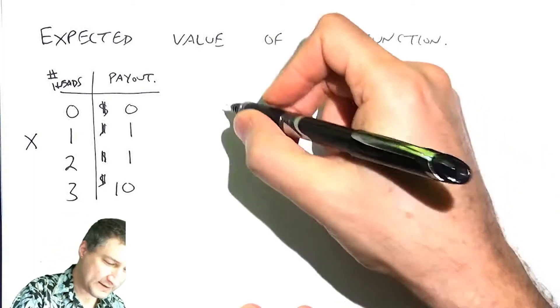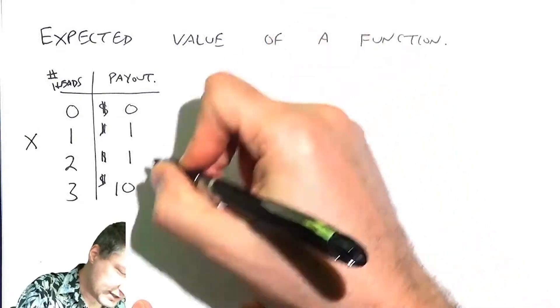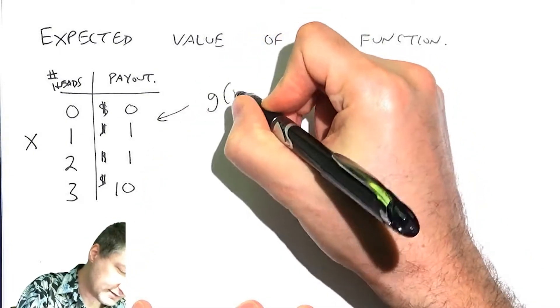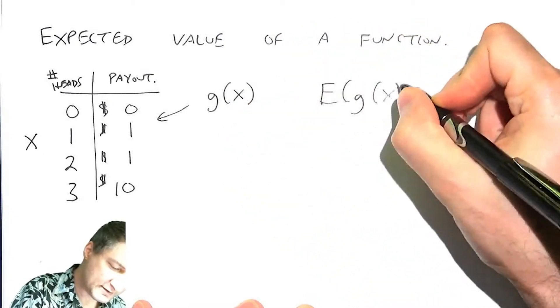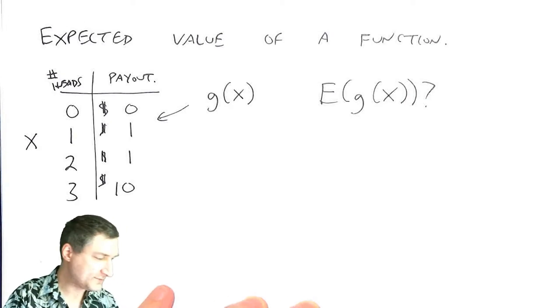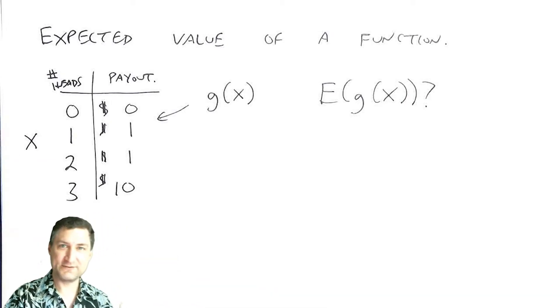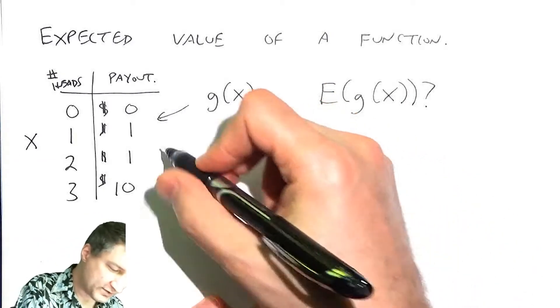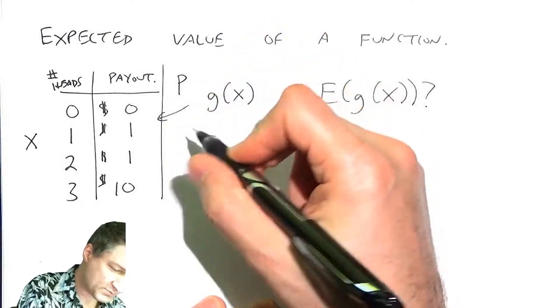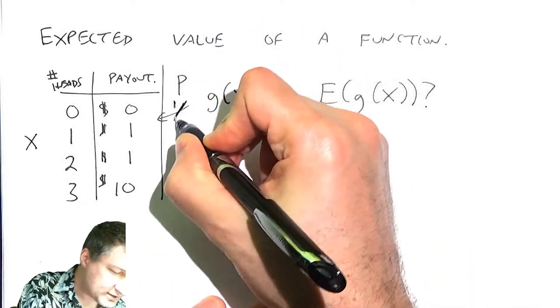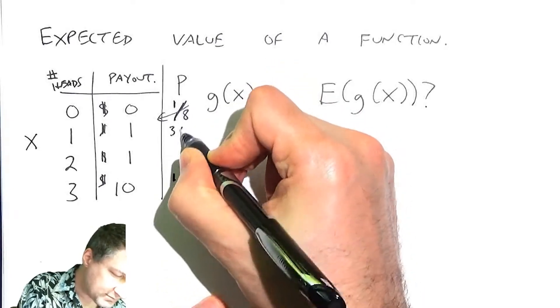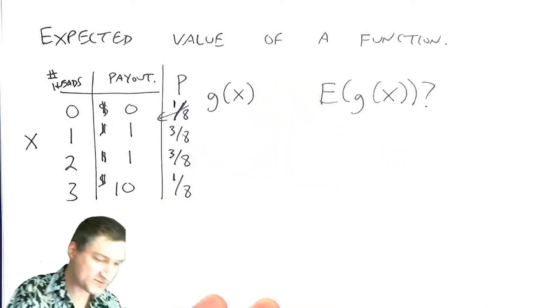And so we want to know if this payout can be viewed as a function of X, what is the expected value of G of X? Well, again, I do it the same way. I say, okay, with probability—and let's remember what the probabilities were. So the probabilities: the probability here is an eighth, the probability here is an eighth, the probability here is 3 eighths and 3 eighths.